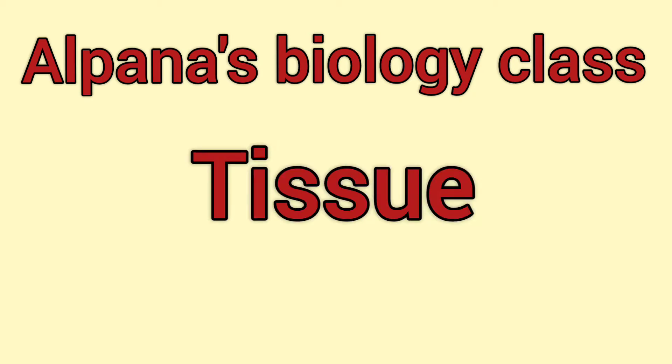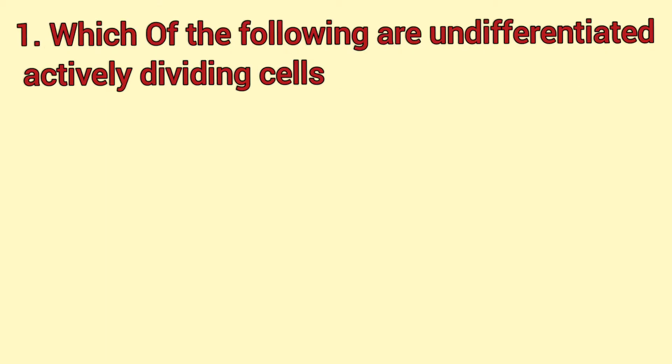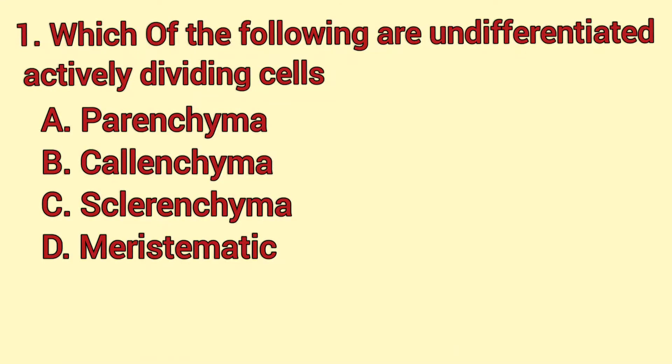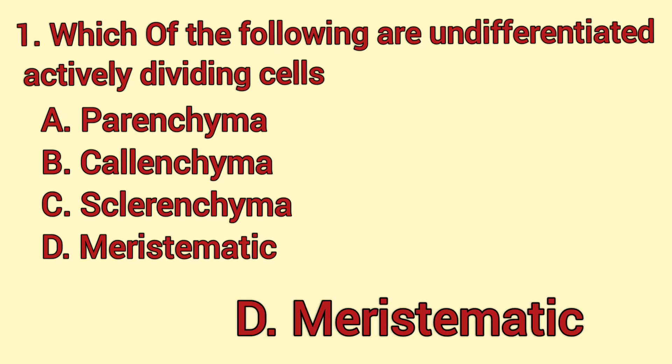Quiz for class 9. Which of the following are undifferentiated actively dividing cells? Parenchyma, colenchyma, sclerenchyma, or meristematic cells? The answer is D — meristematic cells.